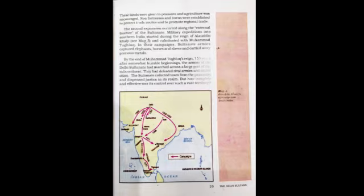Regional traders were also promoted. External frontiers was the next phase of expansion, which started with Alauddin Khalji in South India and culminated with Mohammed Tughlaq. The armies of the Delhi Sultanate marched across a large part of the subcontinent till the reign of Mohammed Tughlaq. They defeated rivals, seized cities, and the Sultanate collected taxes from the peasantry.